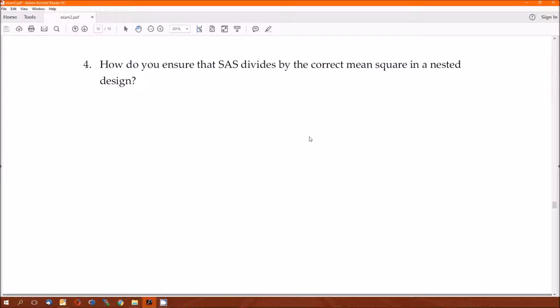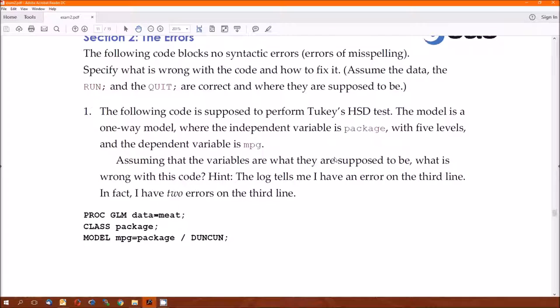How to ensure that SAS divides by the correct mean squared in a nested design? Make sure you add the test option on the random statement. So I'm looking for both test and random statement, or just random. And I'm also looking for random to be spelled correctly.